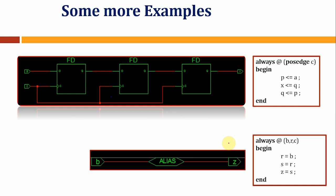We will see some other examples to understand how blocking and non-blocking statements affect the circuit. On positive edge of clock, with non-blocking statements: A gets B, then Q gets something, and Q gets X. Because non-blocking statements are used, all three operations are performed at the same time concurrently.